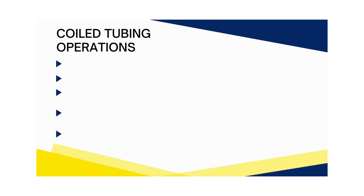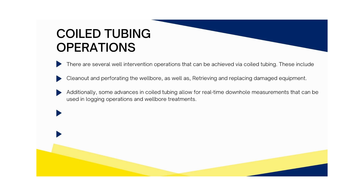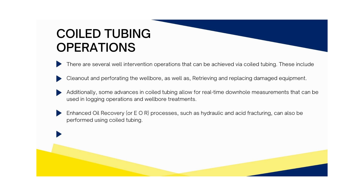Now let us talk about coiled tubing operations. There are several well intervention operations that can be achieved via coiled tubing. These include clean-out and perforating the wellbore, as well as retrieving and replacing damaged equipment. Some advances in coiled tubing allow for real-time downhole measurements used in logging operations and wellbore treatments. Enhanced oil recovery, or EOR, processes such as hydraulic and acid fracturing can also be performed using coiled tubing. Furthermore, sand control and cementing operations can also be performed via coiled tubing.